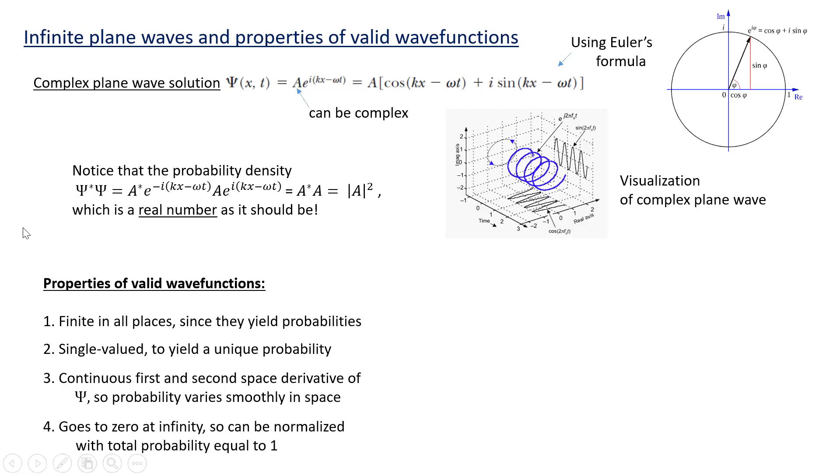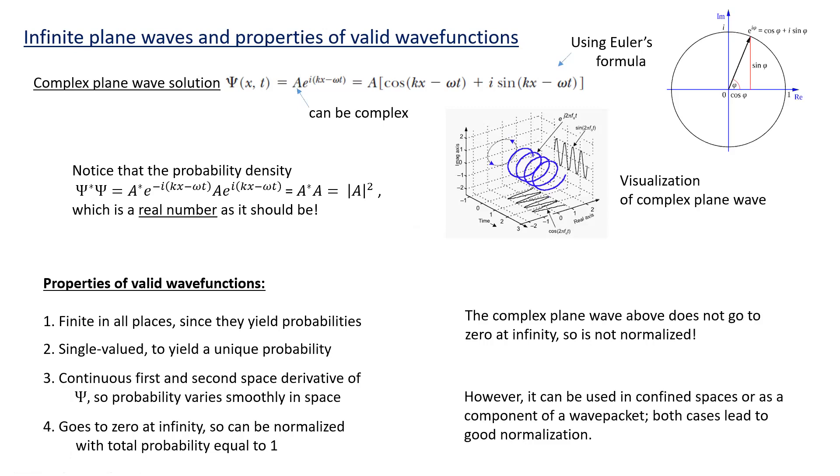Well, that causes a problem for the complex plane wave solution, because it just goes on and on and on, so in fact it's not normalized. So the complex solution here, as written, is not a valid wave function, because if we integrate it from minus infinity to infinity, we get infinity, it's not normalized. But we don't normally use it in this way. We usually use it in a confined space, like the 1D box, which we looked at last class, or we use it as a component of a wave packet, adding up a bunch of plane waves to form a, like for example, a Gaussian wave packet, like we've looked at in previous classes. So we can handle this lack of normalization.